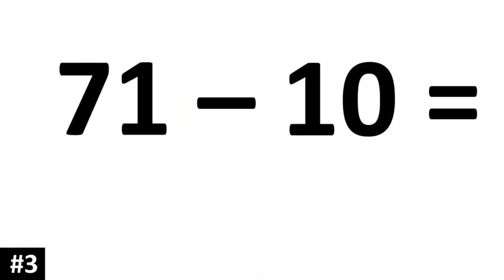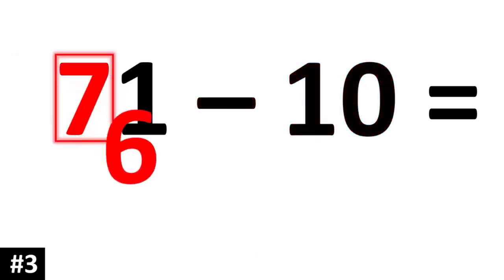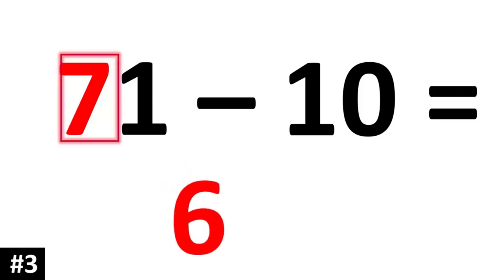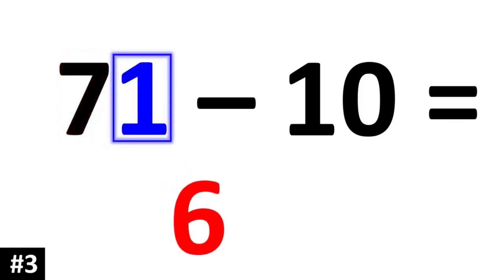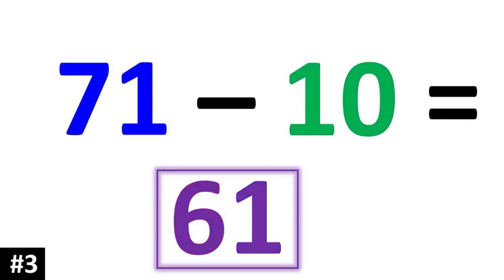How about 71 minus 10? Subtracting by 10 means that 7 is going to go down to 6. The ones digit stays the same, we bring down the 1, and 71 minus 10 is 61.